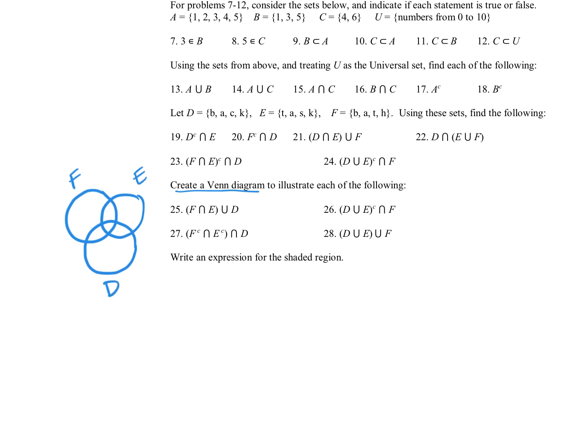The intersection of F and E would be all of that middle region. Then we're going to union — that means we're also going to include D. So that adds in everything that was in D, giving us that whole chunk.